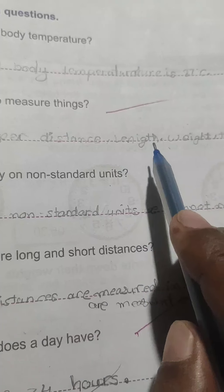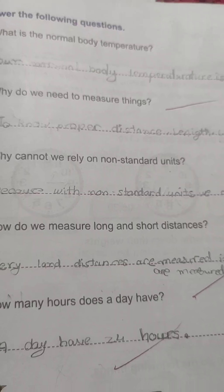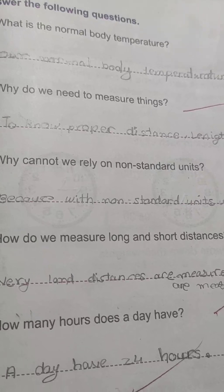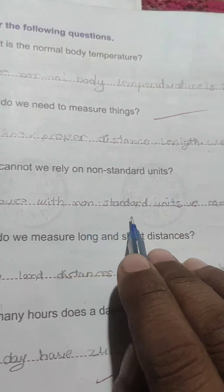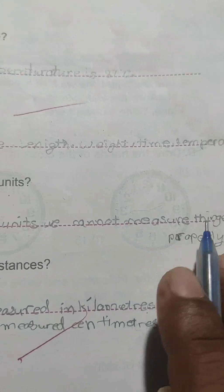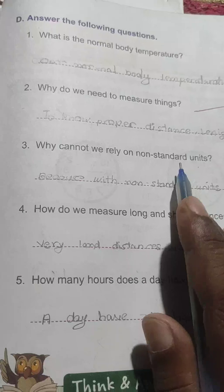Why do we need to measure things? We need to know proper distance, length, weight, time and temperature. Measurement इसलिए जरूरी है कि हम proper तरीके से information निकाल सकें। Why cannot we rely on non-standard units? Because with non-standard units we cannot measure things properly — जो non-standard units हैं यह properly measure नहीं कर सकते।